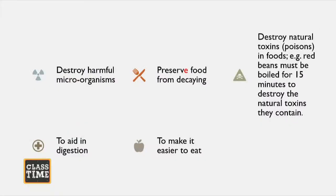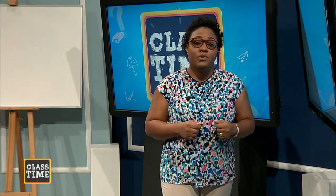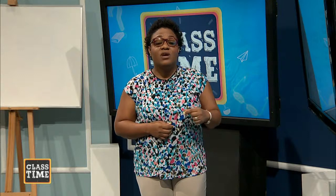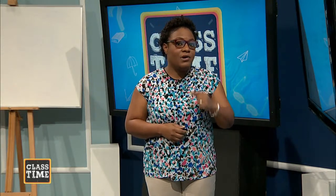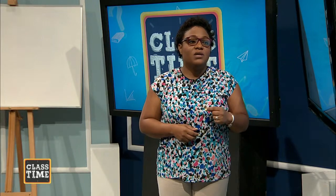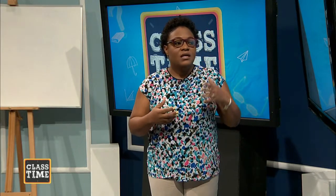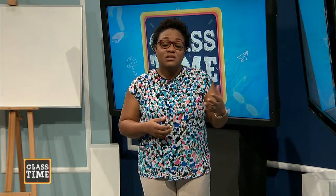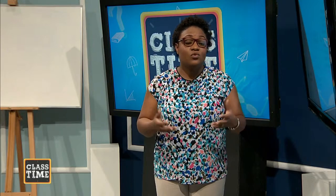Cooking destroys natural toxins or poisons in food. There is a toxin found in red beans called kidney bean lectin — a sugar protein called glycoprotein. This toxin is also present in many other beans like broad beans, but its highest concentration is in red kidney beans. It is highly recommended to boil red kidney beans for at least 15 minutes to destroy the natural toxins present, as these can also cause foodborne illnesses.